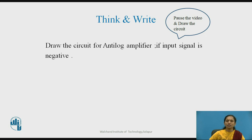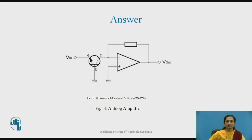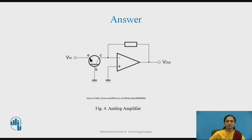The answer is: use an NPN transistor with the emitter connected to the input signal — the negative side connected to Vin. In this way, we can obtain the anti-log amplifier using a transistor.